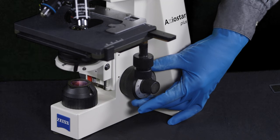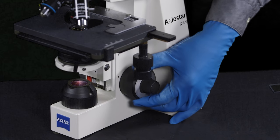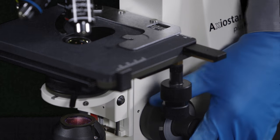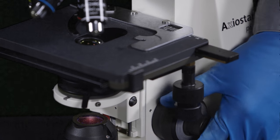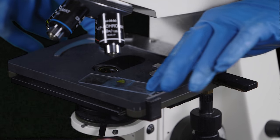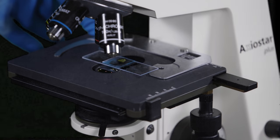The next step is to use the course focusing knob to lower the stage all the way to the bottom. Open the clip, put your slide on the stage, and release the arm.